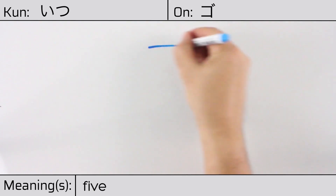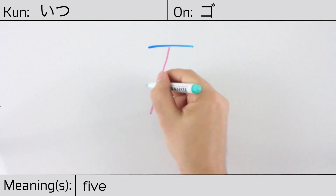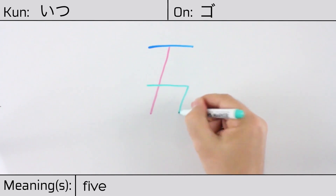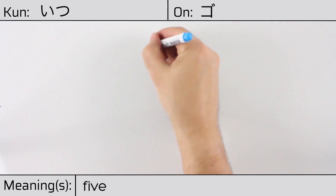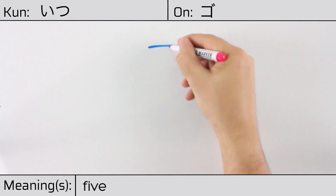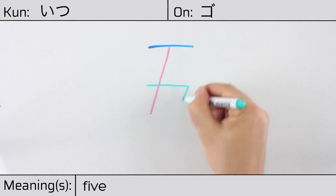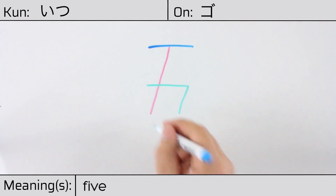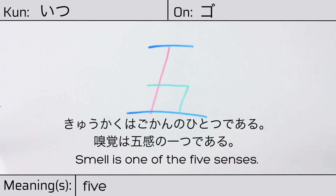You can remember this kanji by thinking of it as an X with a line on top and bottom. When one counts to ten, one first counts the fingers left to right to count to five, then crosses back. Our example sentence is: Kyukaku wa gokan no hitotsu de aru — Smell is one of the five senses.